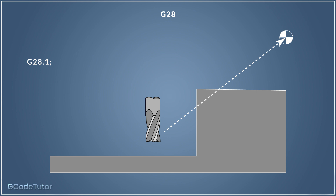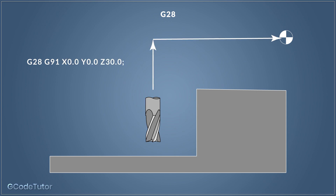Some controllers also use G28.1. This G-code on its own will take all axes back to the zero position — it works much the same way but doesn't go via an intermediate point; it just references tool home directly. In our step example, G28.1 would crash the machine. It works much the same way as the reference-all button on some CNC machine controls. Some machines, such as Makinos, have a button you can push once and the tool goes back to its home position — G28.1 acts exactly the same way.